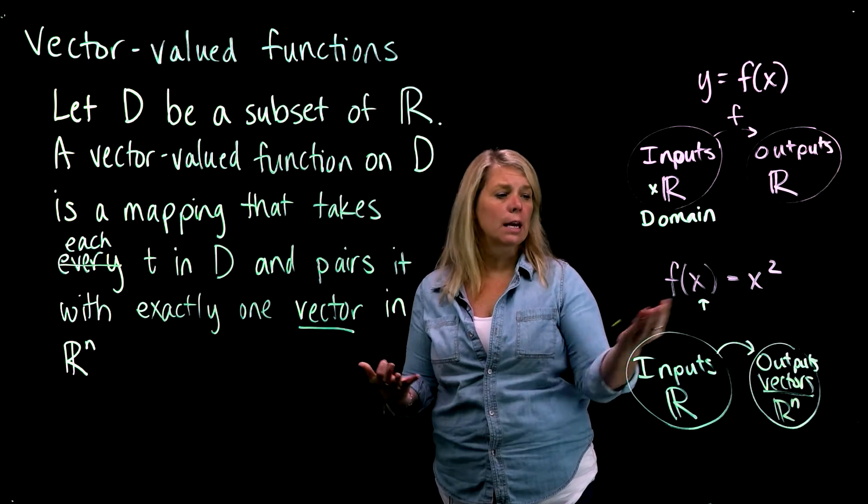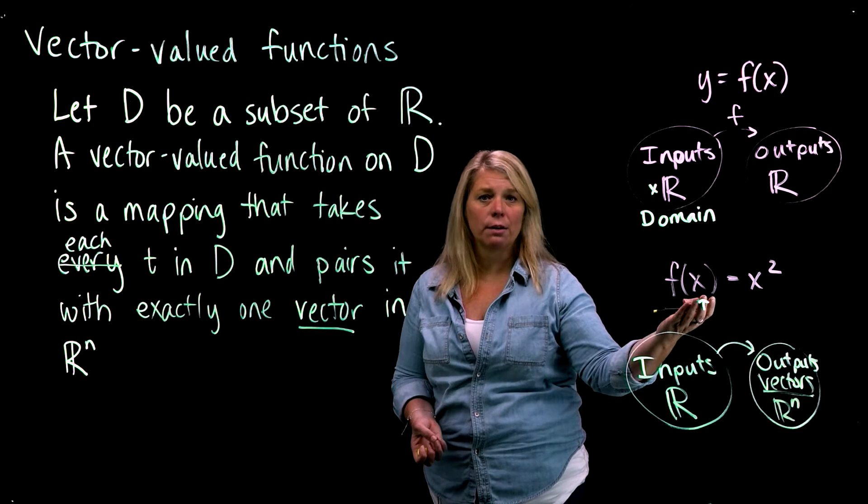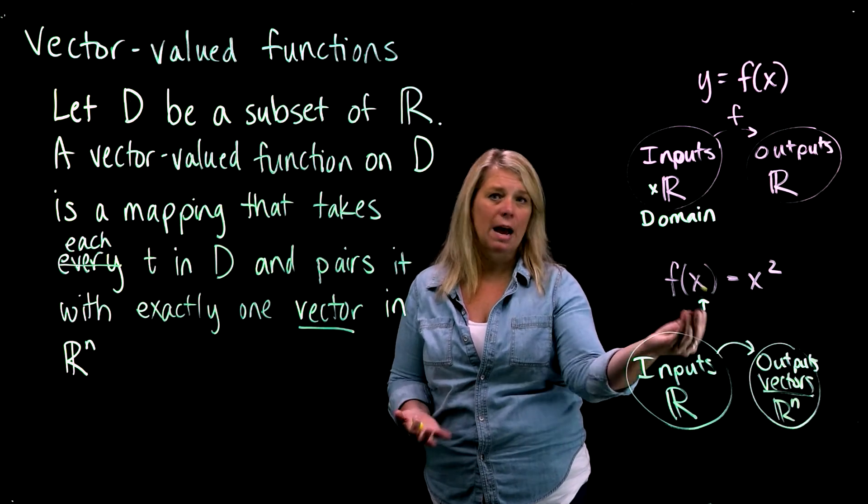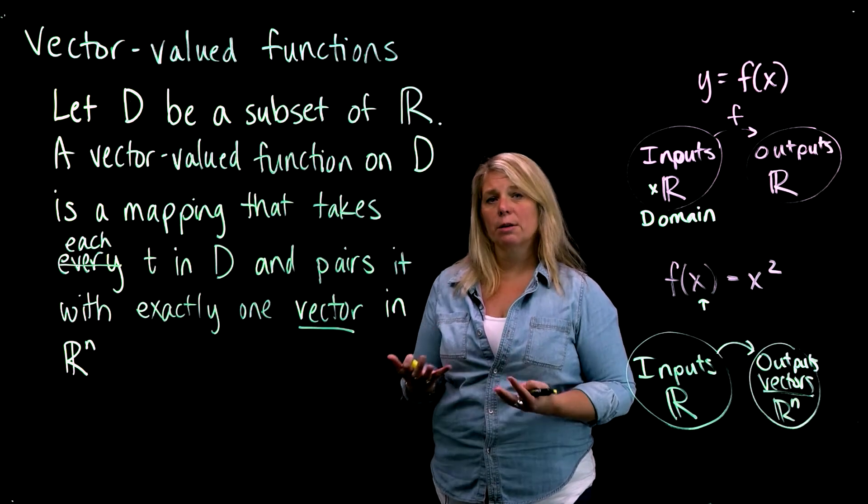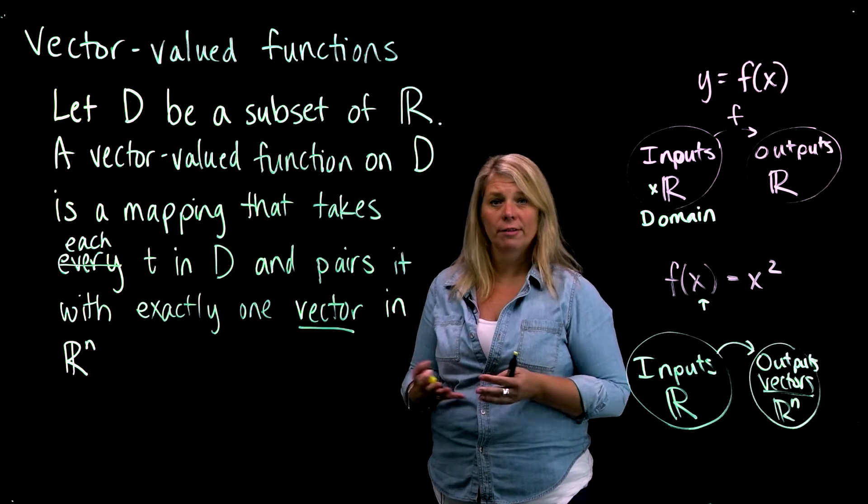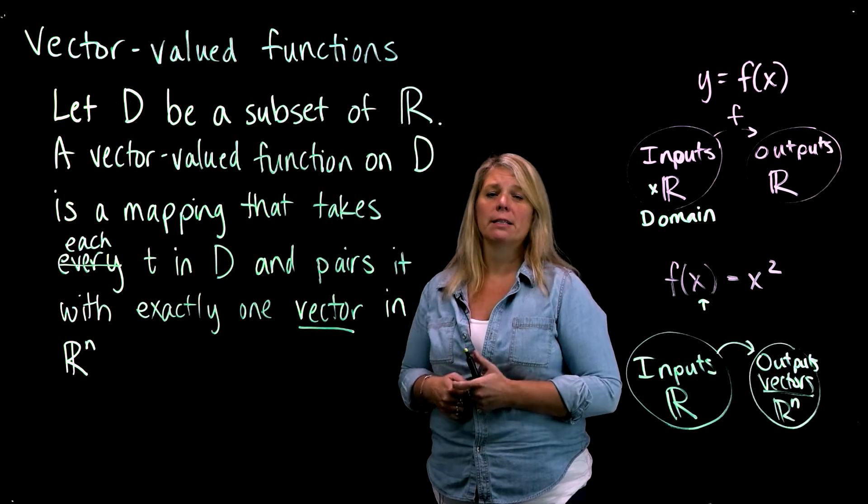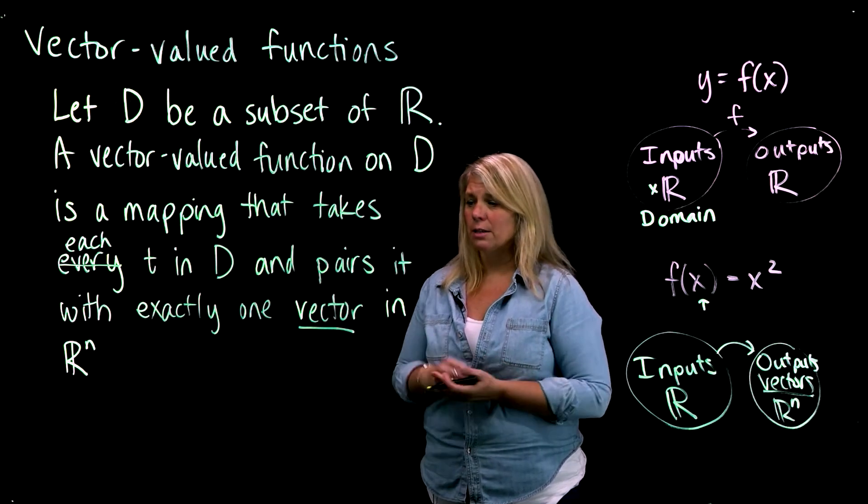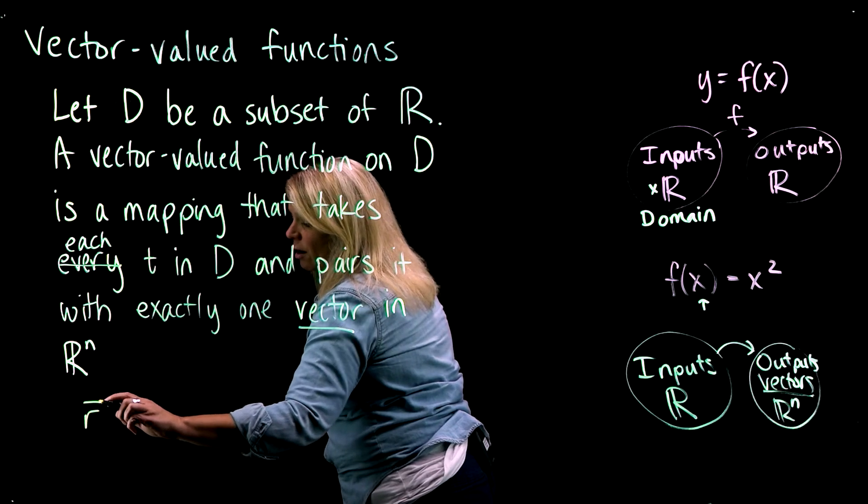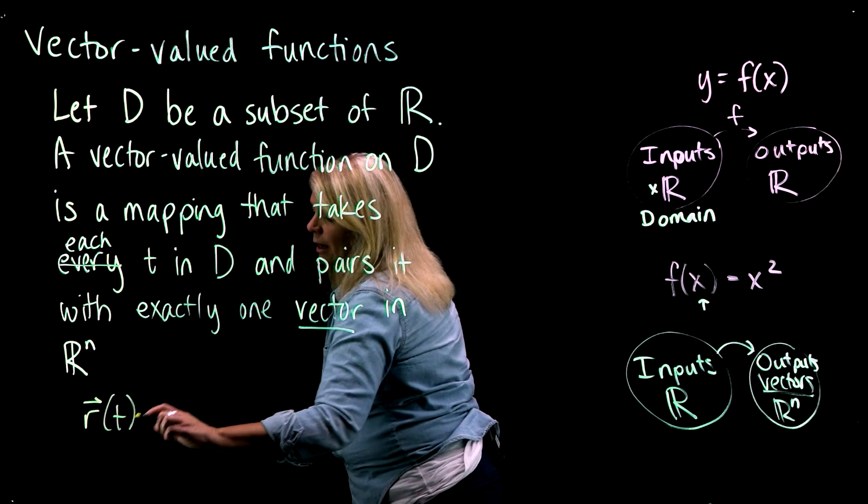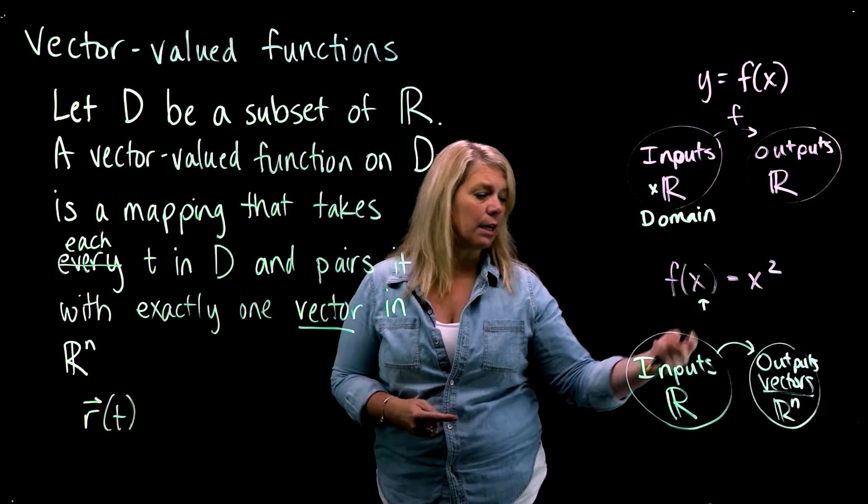Just like you're used to some ordinary notation, for ordinary functions we often use f of x, but you know you could use other letters. It's the same with vector-valued functions. There's some common notation you'll see often. We often write something like R of t, sort of like we have f of x here.